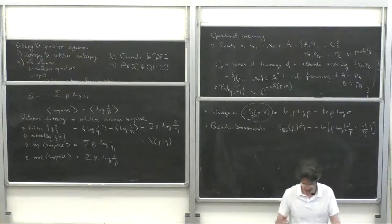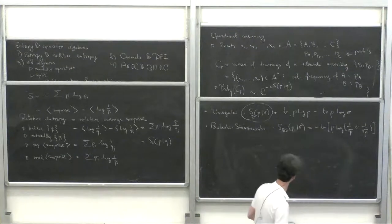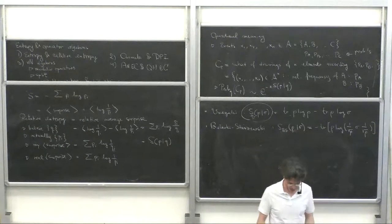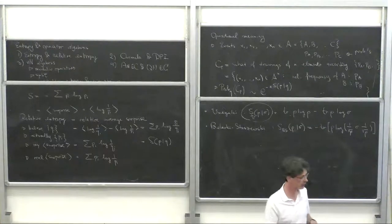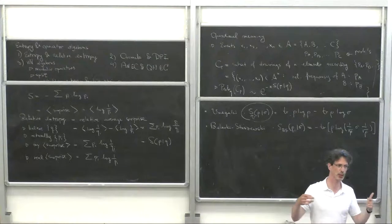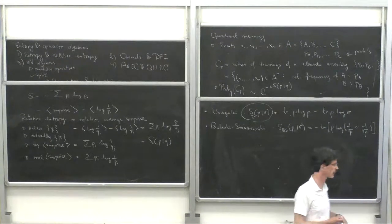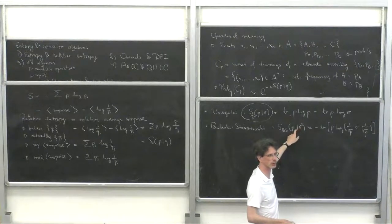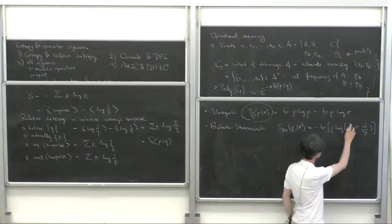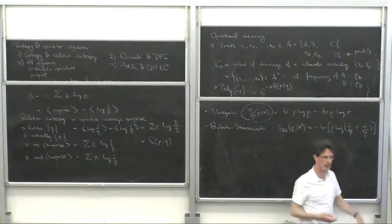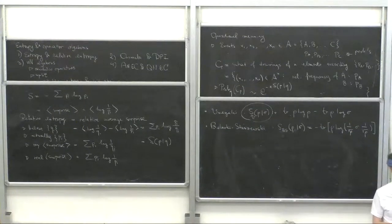That's a very good question about the motivation behind the two definitions. The motivation is that there's a key property of the relative entropy — a key property I will describe shortly — which is that it decreases if you apply a channel to each density matrix. That's what you want from basically any entropy. Both satisfy this, but if you wrote some other expression like rho to the one-quarter sigma something else, that may not be satisfied.